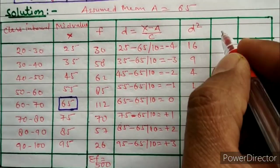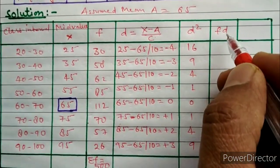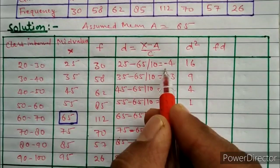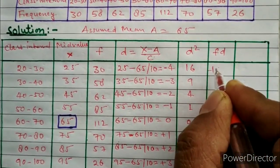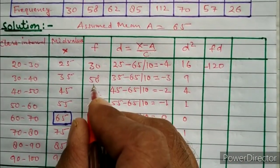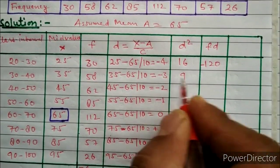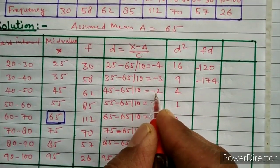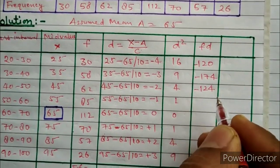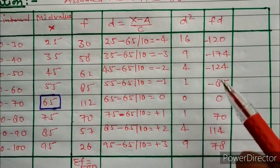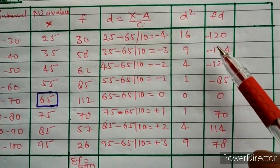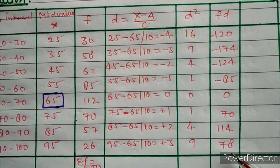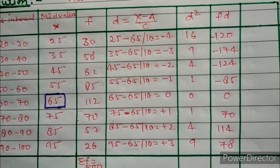In the next column we write the caption fd. We calculate fd by multiplying the frequency by the deviation d. Here 30 into minus 4 gives minus 120. Then 58 multiplied by minus 3 gives minus 174, and 62 multiplied by minus 2 gives minus 124, and so on. An important thing is to consider the signs — we add the negative values together and the positive values together, then combine both.